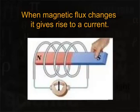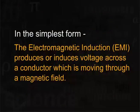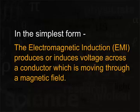Magnetic flux can be changed either by moving a magnet inside the coil of a conductor, or by moving the coil itself while keeping the two magnetic poles in a fixed position. In its simplest form, electromagnetic induction produces or induces a voltage across a conductor which is moving through a magnetic field.